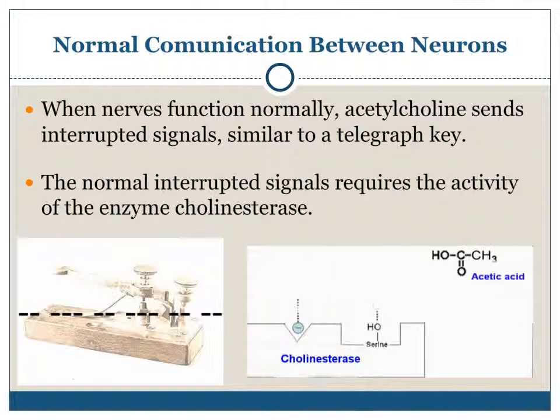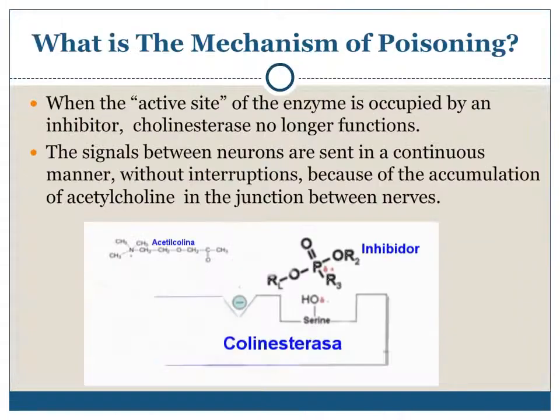Normal communication between neurons. When nerves function normally, acetylcholine sends interrupted signals, similar to a telegraph key. These normal interrupted signals require the activity of the enzyme cholinesterase.